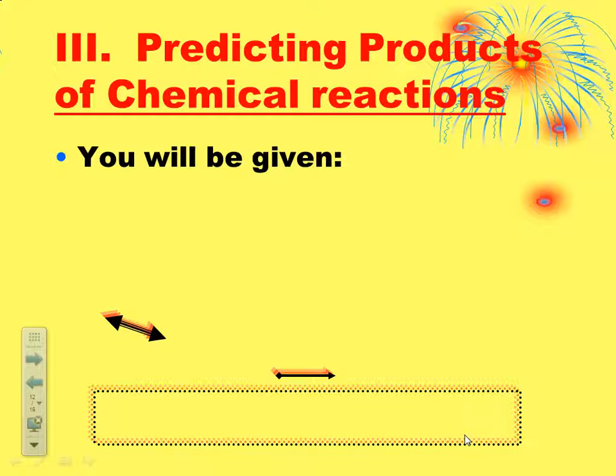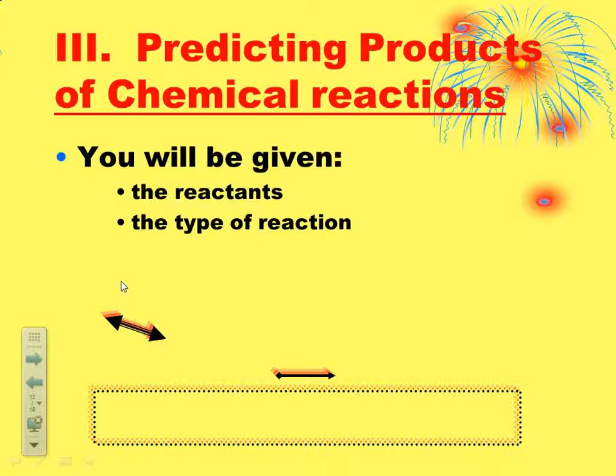We've learned about balancing equations, and yesterday we learned how to classify our chemical reactions as to what type of chemical reaction it is. Today, we're going to look at how to predict our products for chemical reactions. Now, you have to be told a couple of things in order to predict the products.